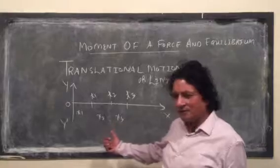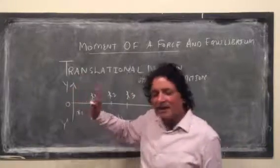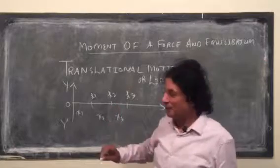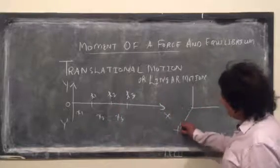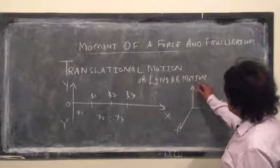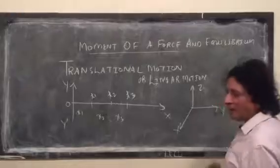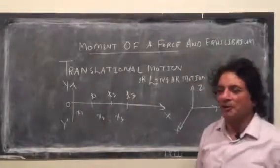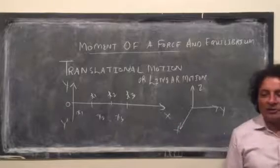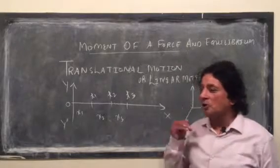If you move along y axis, again it is translational. There are three axes: x axis, y axis, z axis. You are moving on x axis, rectilinear. You are moving along y axis, rectilinear. You are moving along z axis, rectilinear. Every time it is straight line motion or linear motion.